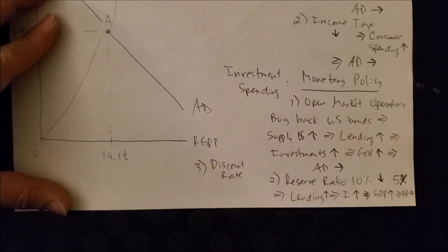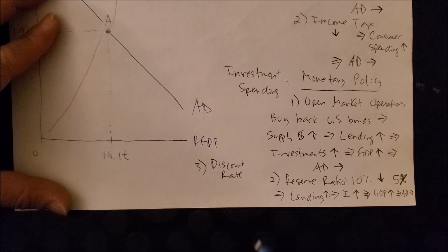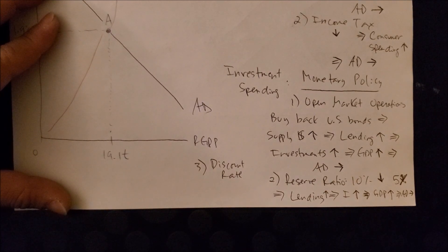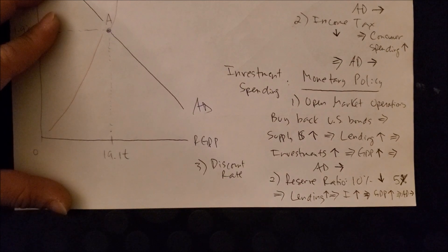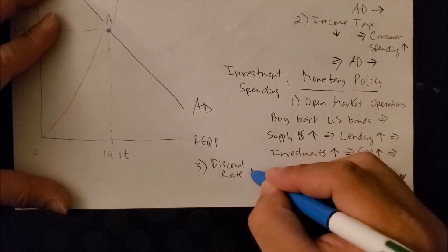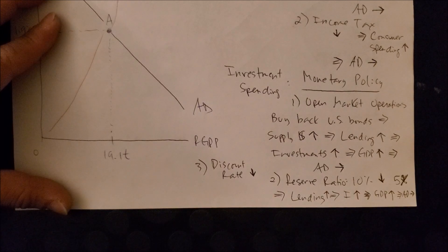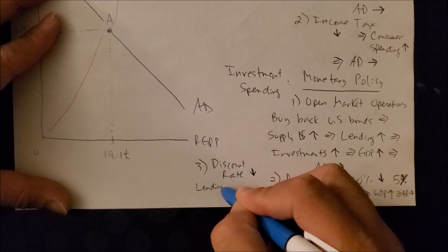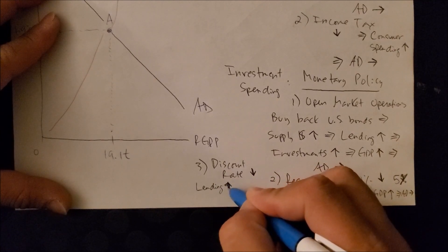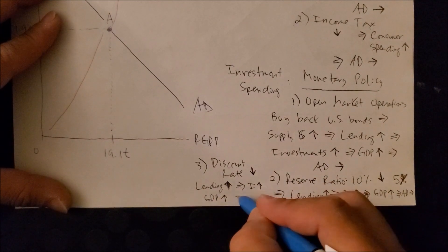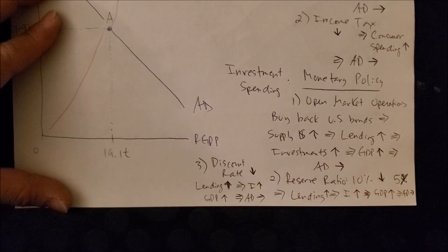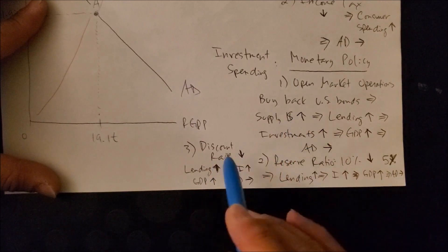The third monetary policy tool is the discount rate — the rate the Fed charges commercial banks to borrow money. It is called a 'discount' rate because it is lower than the rate commercial banks charge each other. If the Fed lowers the discount rate, more commercial banks will borrow from the Fed, increasing lending. This raises investment, increases GDP, and shifts AD to the right.